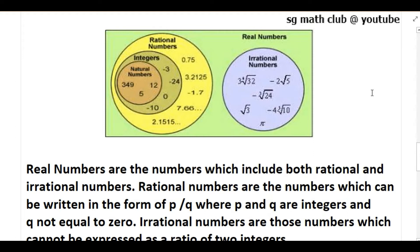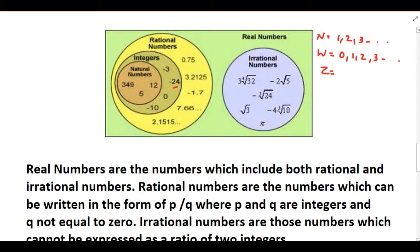Natural numbers are the counting numbers and they start from 1, 2, 3, etc. Then come whole numbers — the smallest whole number is 0, and they start from 0, 1, 2, 3, etc. After that we have integers. Integers include both positive numbers as well as negative numbers and 0 together, for example minus 10, 0, minus 24, minus 3.